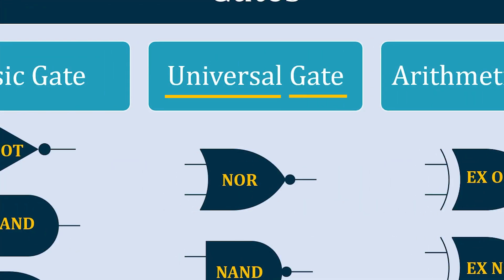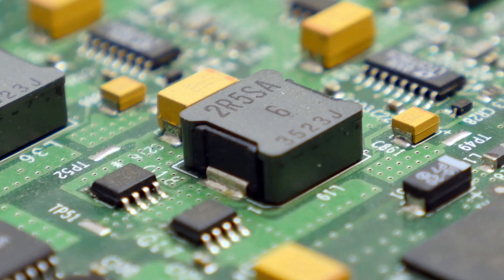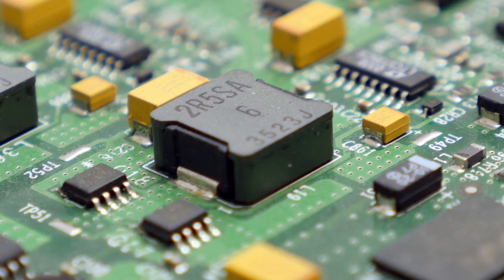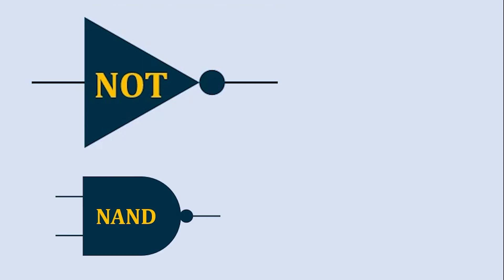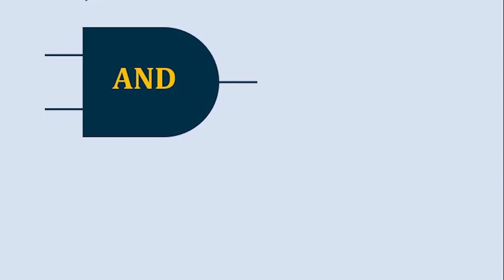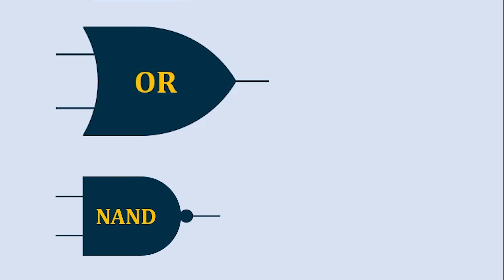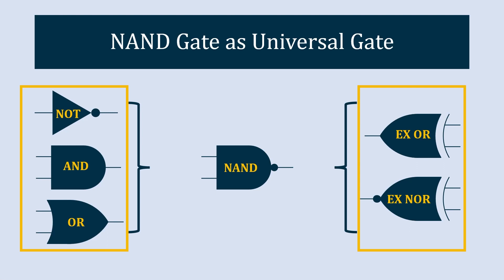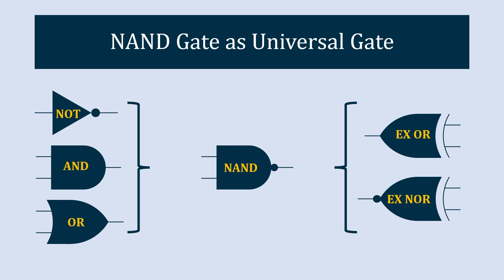Universal gate. Let's separate these two terms and understand what they mean. In our context, universal means a thing which can be used anywhere. So when we talk about a universal gate, it means a gate which can be used anywhere — you can use NAND gate to create a NAND gate, an AND gate, or an OR gate. That is why NAND gate and NOR gate are called universal gates: you can create any gate using them.